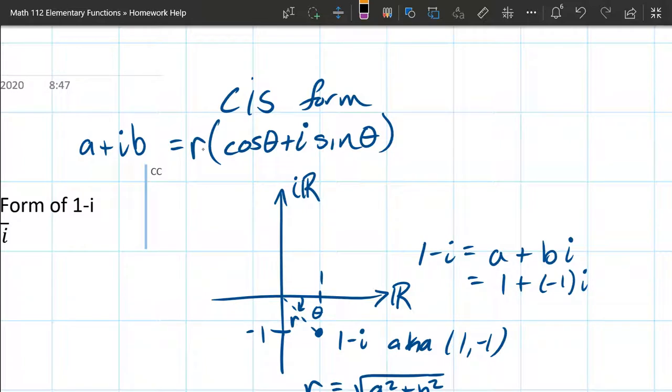And you can either write it in a plus ib form, or in this form on the right side. And this form on the right side, you can distribute the r into here if you want to, or leave it outside.